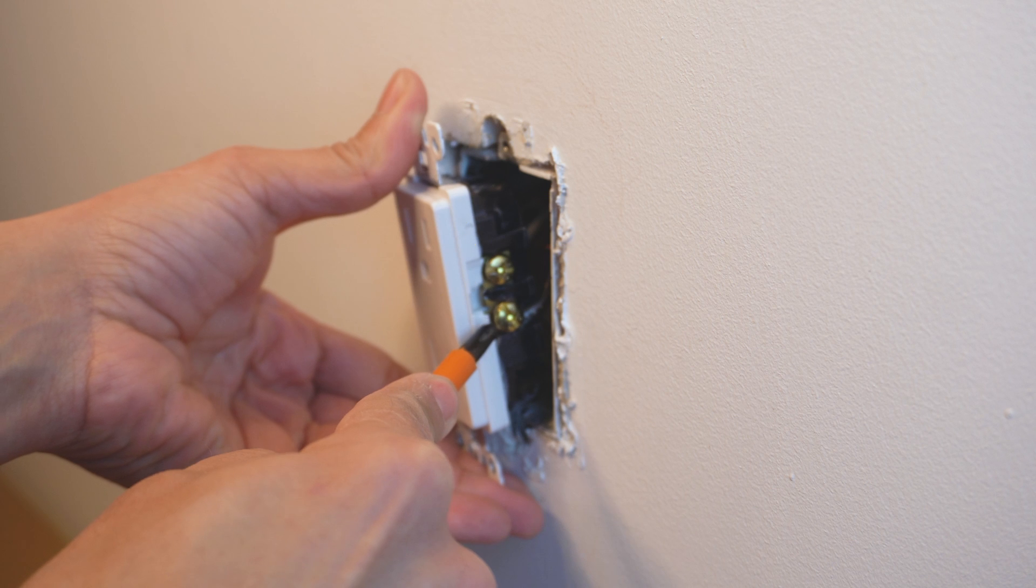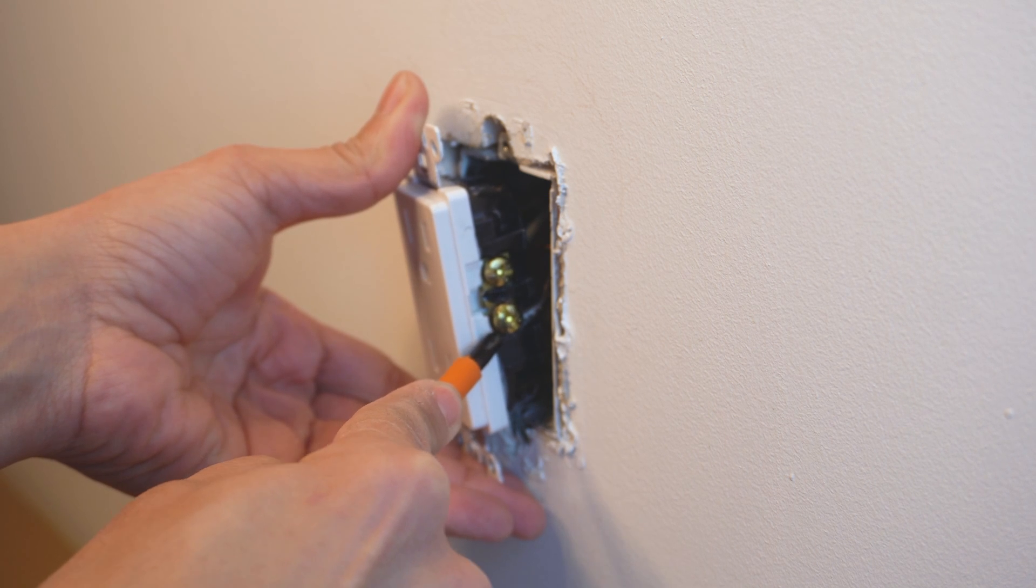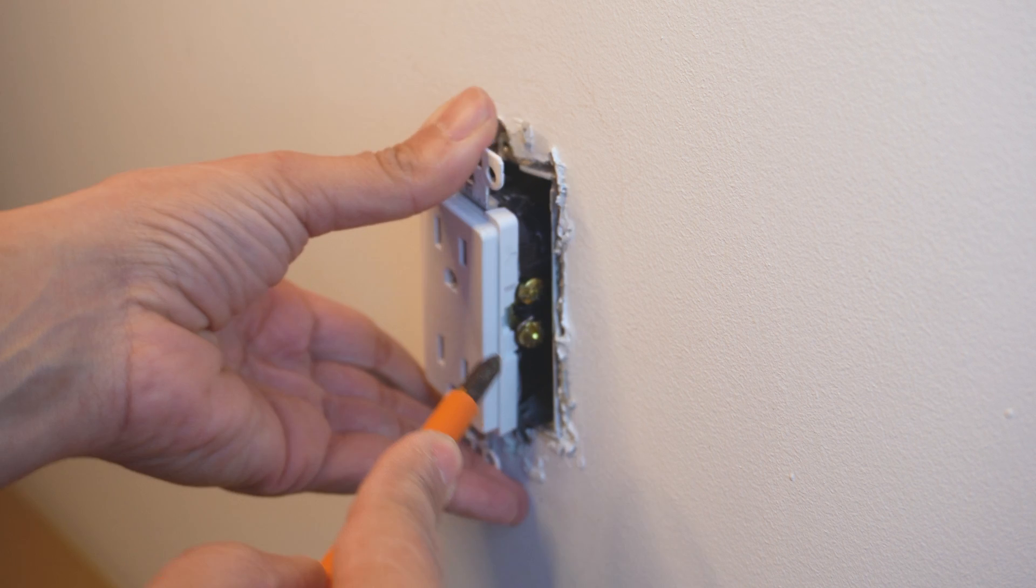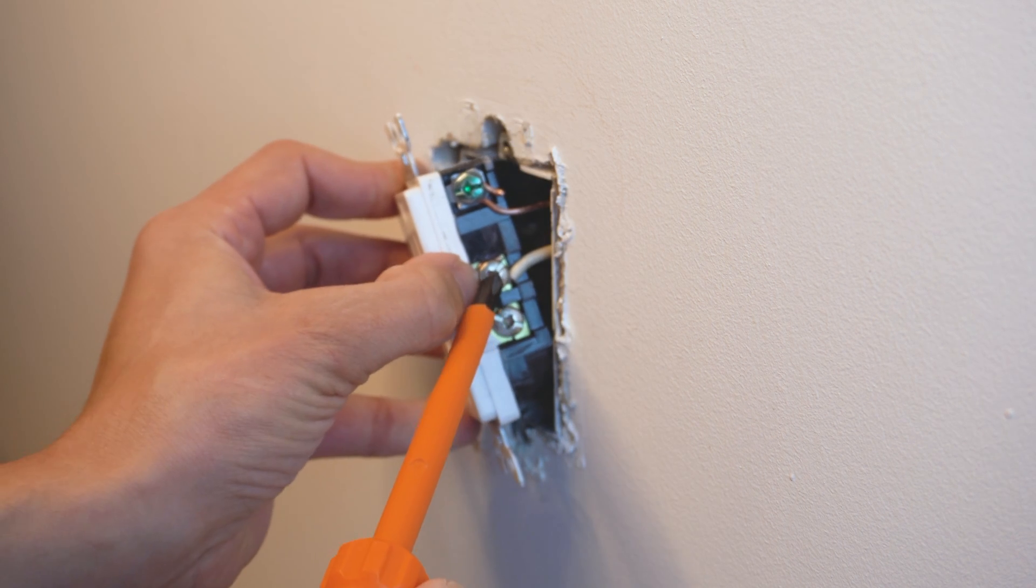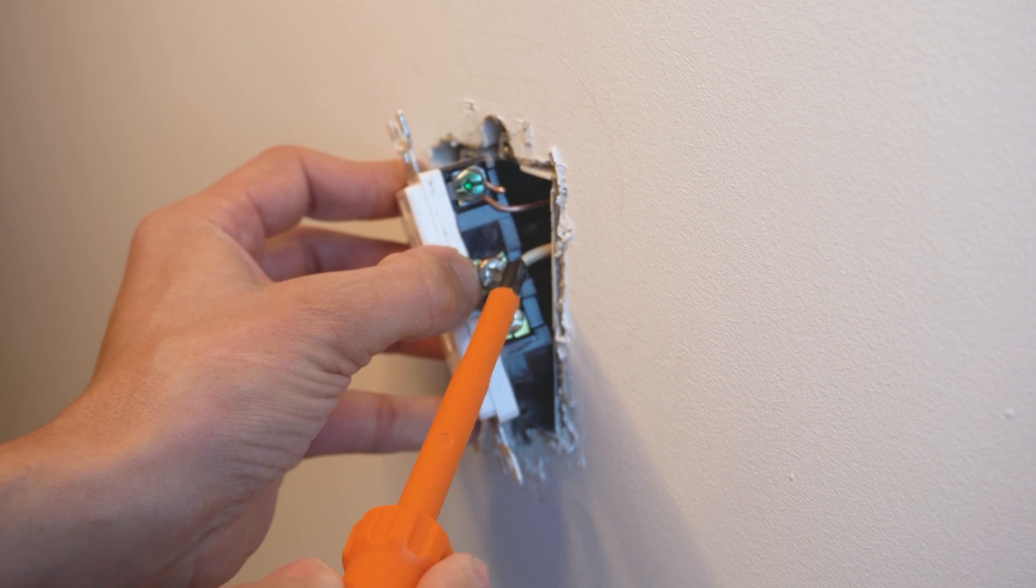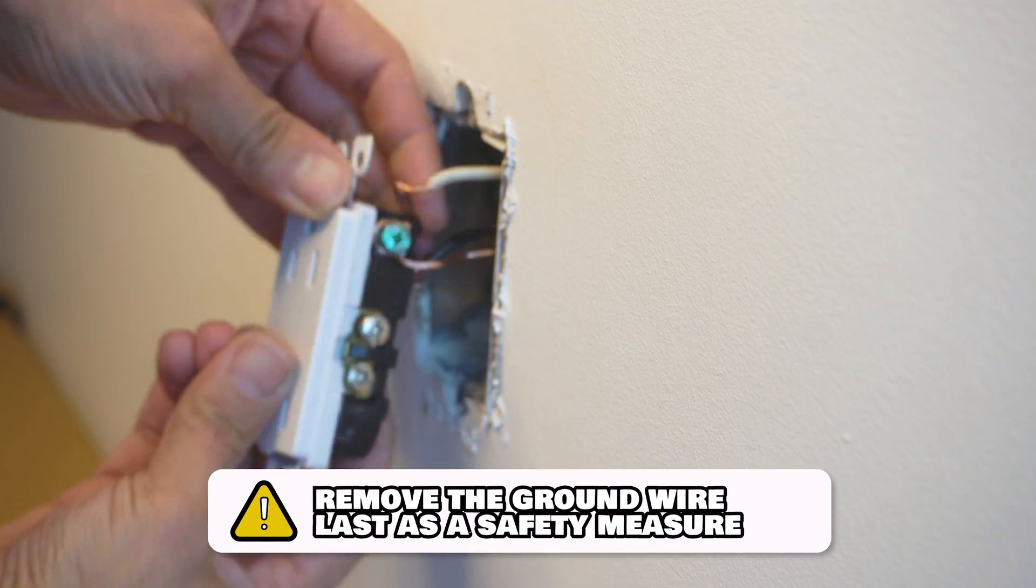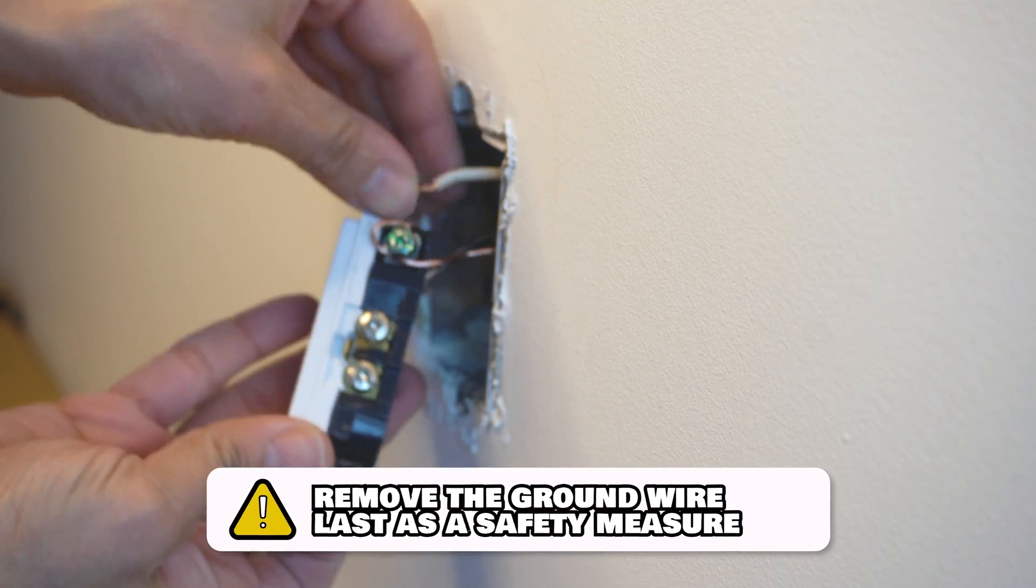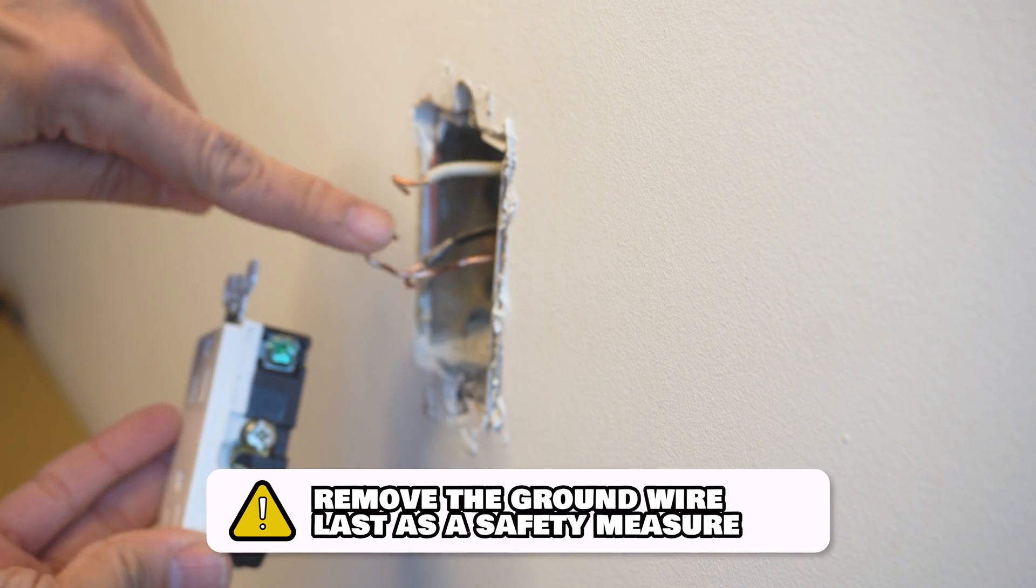So for safety reasons, you're going to remove the black wire and this screw terminal first, and then you're going to remove the silver screw that is holding your white wire. The last one you want to remove is your ground wire, and that is a safety measure to keep you safe.